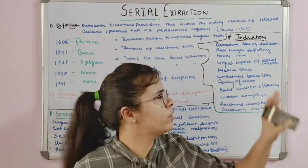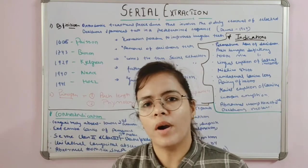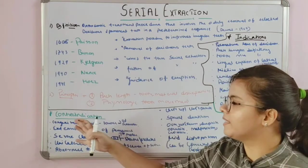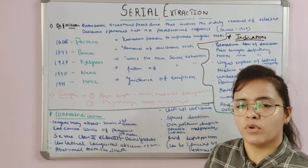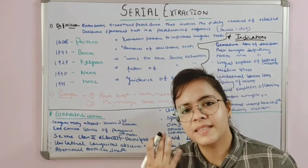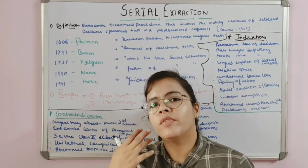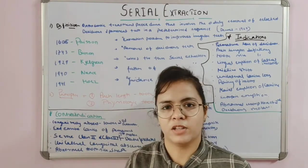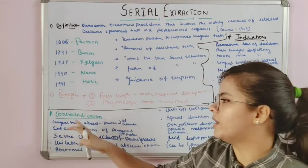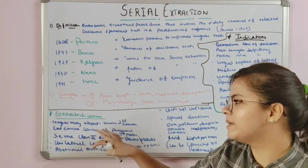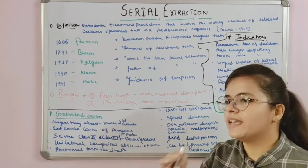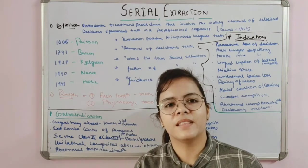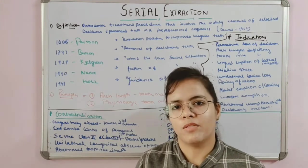Now the contraindications — cases where you do not perform serial extraction. These include: congenital absence of the lower second premolar, because if the premolar will not erupt, the existing space will accommodate the remaining teeth; extreme caries of a permanent first molar; and severe Class II and Class III cases, where there is a severe increase in overbite.